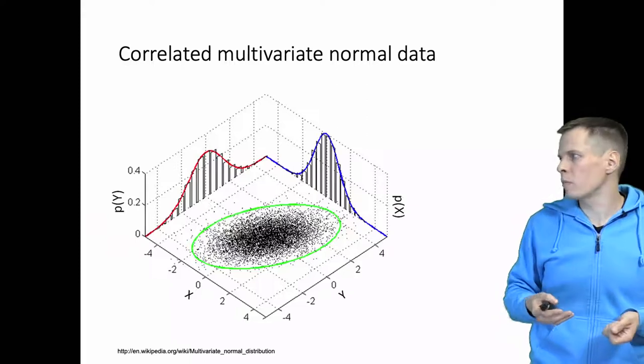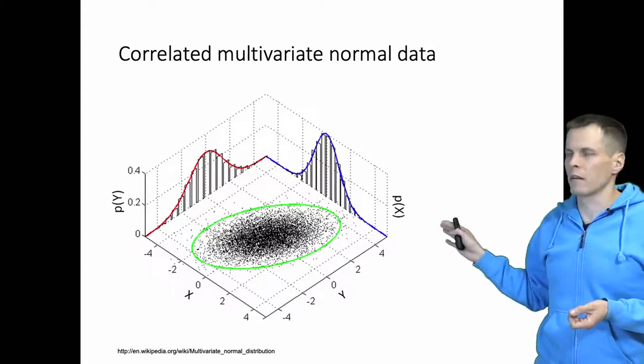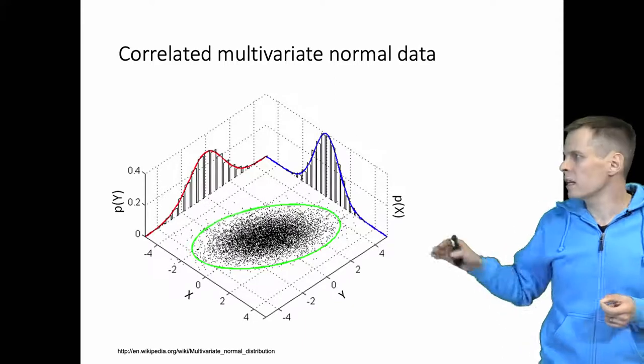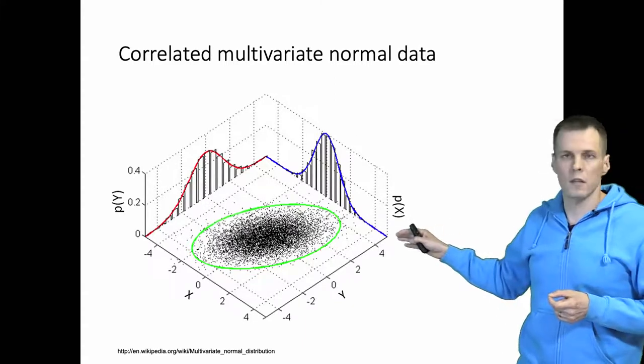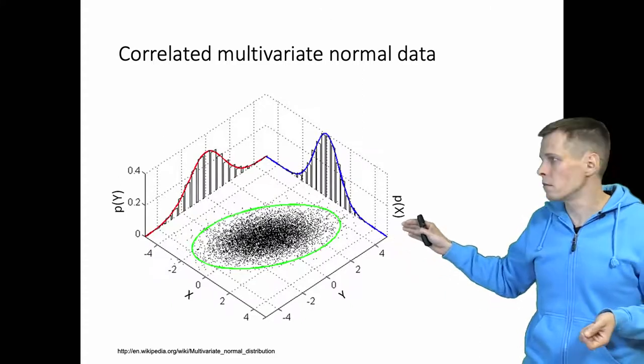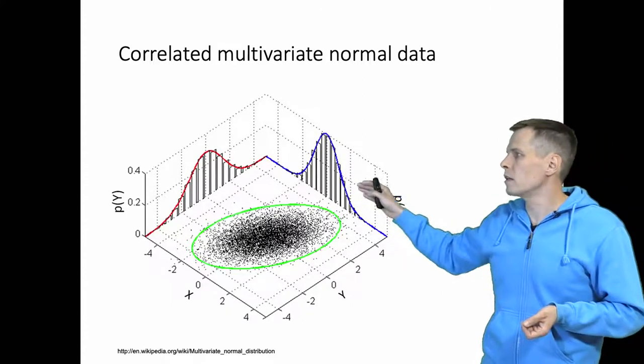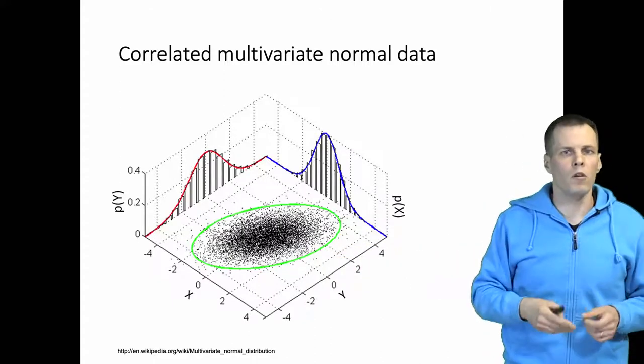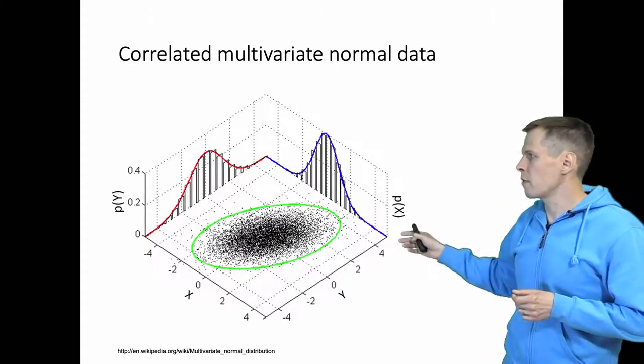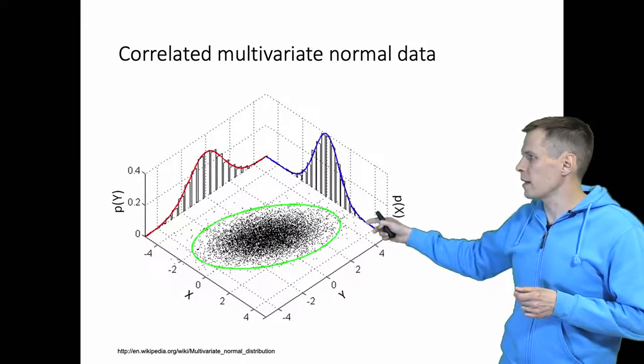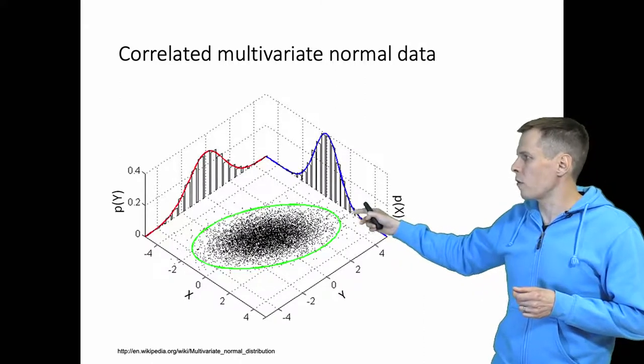The way to deal with that problem is that we use multivariate normal data. So this is a bivariate normal distribution. The idea is that if we have two variables that follow multivariate normal data, both of them are normally distributed but they are correlated. So if we take a random draw from this population and receive a high value of y, then it's more likely that we receive a high value of x.